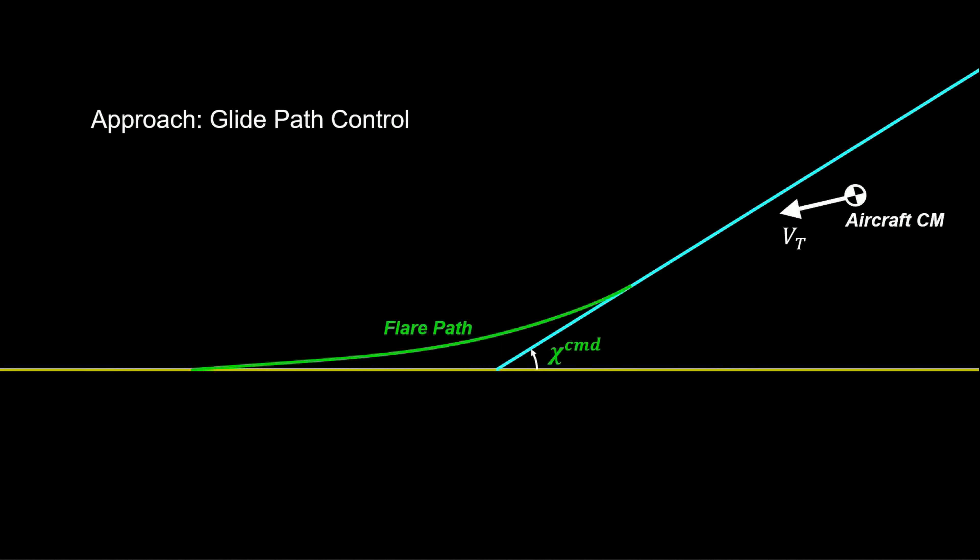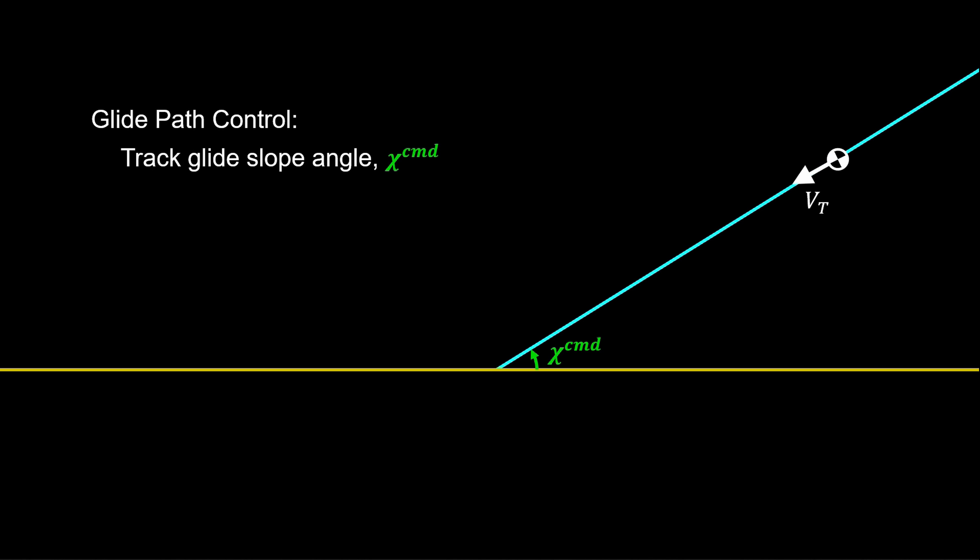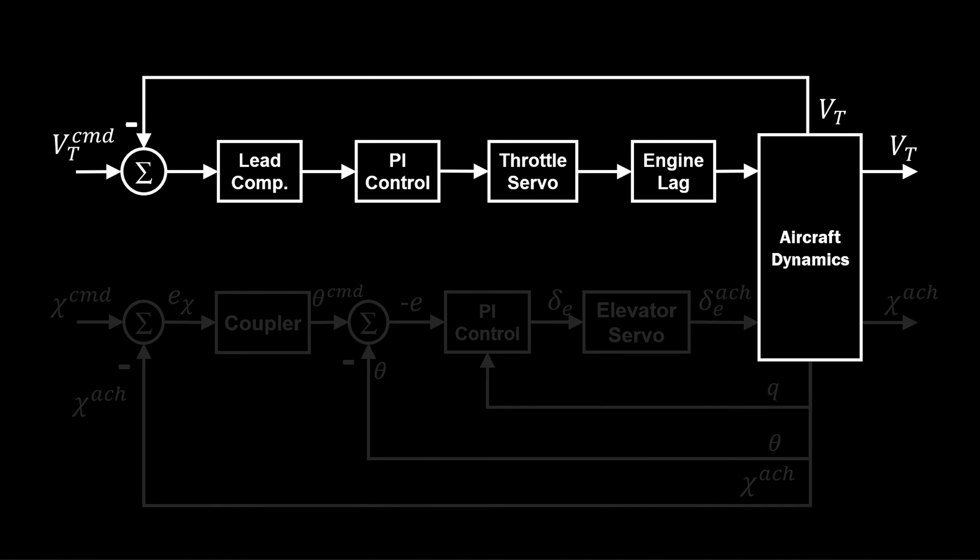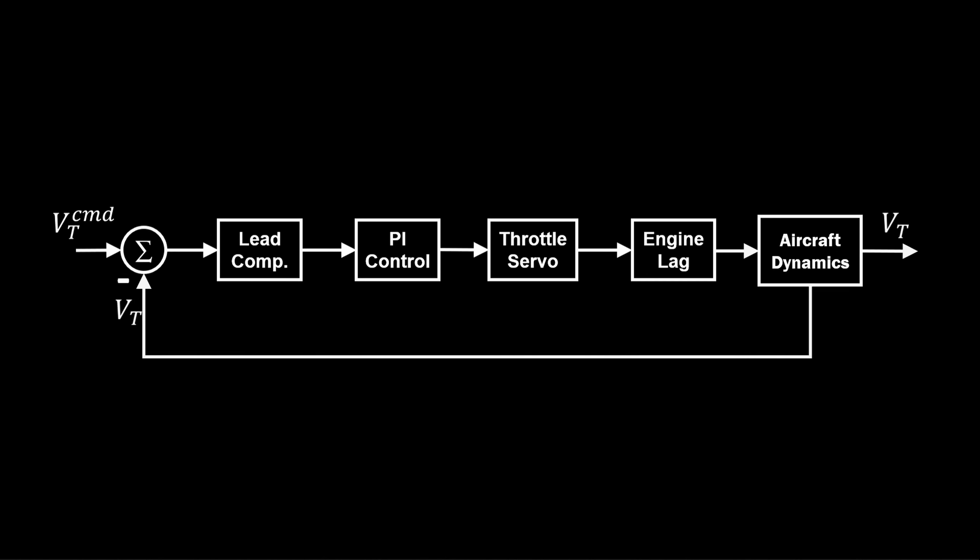To track a glide slope in automatic landing control, we seek to align the velocity vector with the glide path and control its magnitude on the glide path. These are two separate control objectives corresponding to separate control processes. Here, we focus on airspeed tracking.